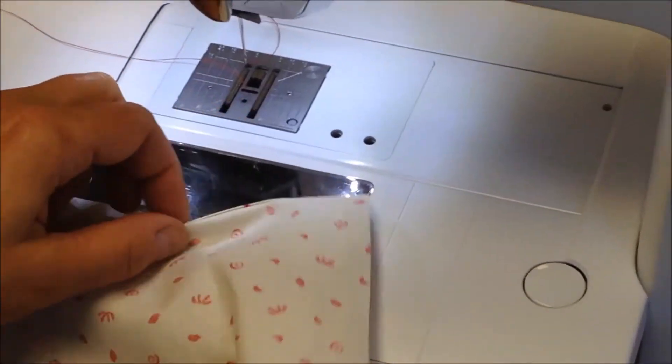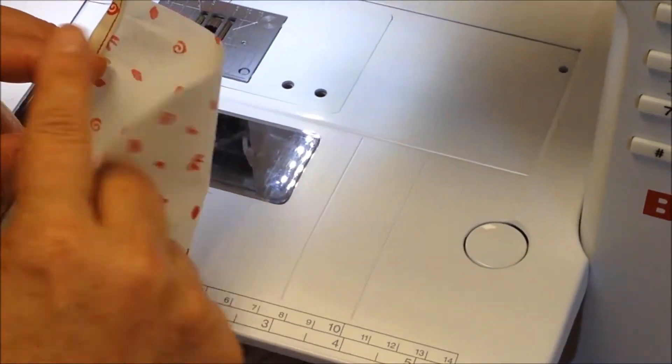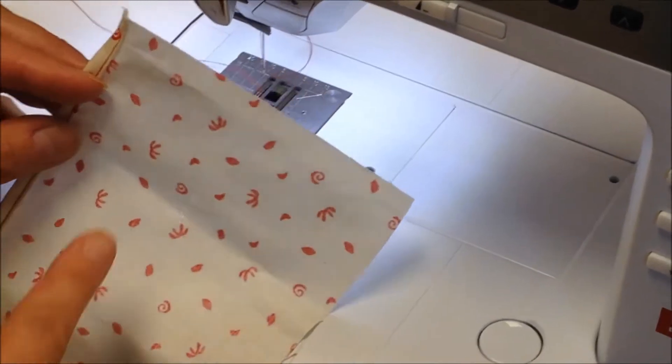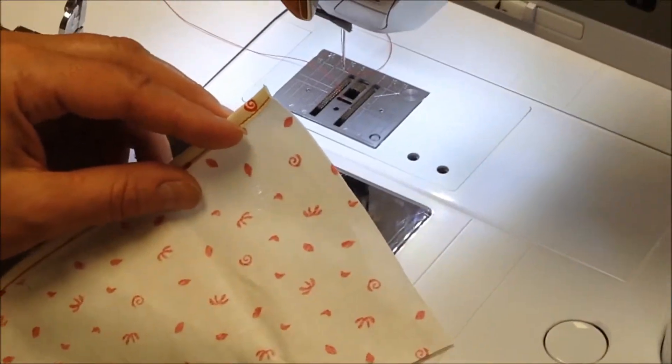When you use a narrow rolled hem, you cannot turn a corner. So you would have to hem two sides and then hem the top and then hem the bottom. So I'll also teach you how to do a corner.